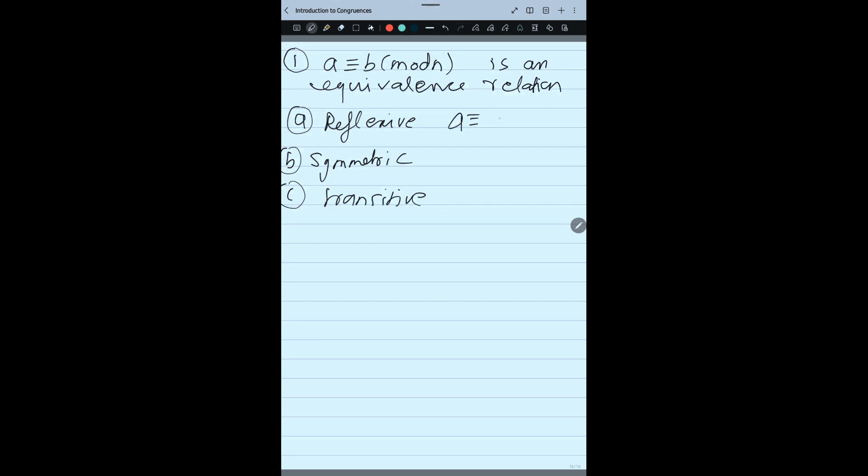Reflexive means A congruent B modulo N, then B congruent A modulo N, which we made very clear while doing the definition. Transitive means A congruent B modulo N and B congruent C modulo N implies A congruent C modulo N. So if these three properties are satisfied, it is called the equivalence relation. We do not have to do the proof right now, we will just understand the properties.